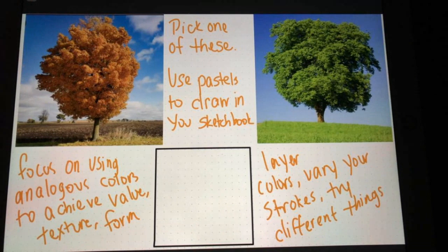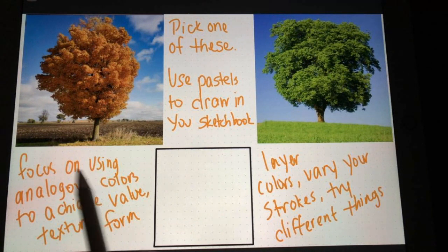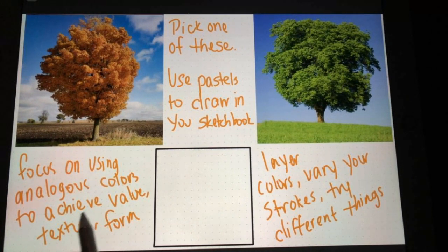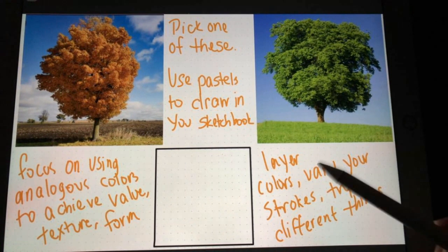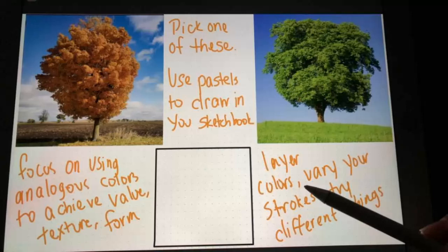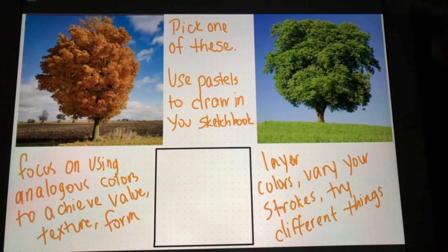The first thing we're going to try out is a tree. You're going to pick one of these and draw it within your three inch block. I want you to focus on using analogous colors — those are the rule of threes, the three colors related to each other — to achieve value, texture, and form. You're gonna layer your colors, vary your strokes, and try different things.